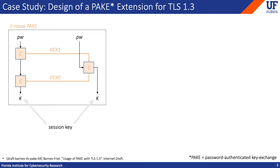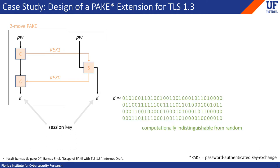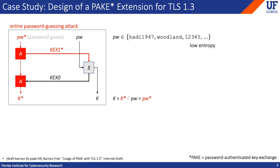One of my favorite types of protocols is password authenticated key exchange, or PAKE for short. The goal of PAKE is to establish a key between a client and a server who initially only share a password. The security goal for PAKE is that the session key should be indistinguishable from a random key, even to an adversary who observes all network traffic and can actively interfere in the protocol's execution. This should hold even when the password has relatively low entropy. If the entropy is too low, there's no hope of achieving security at all, because the adversary can always try to guess the password when impersonating one party to the other. PAKEs are designed to ensure that the adversary can't do any better than this simple online guessing attack.